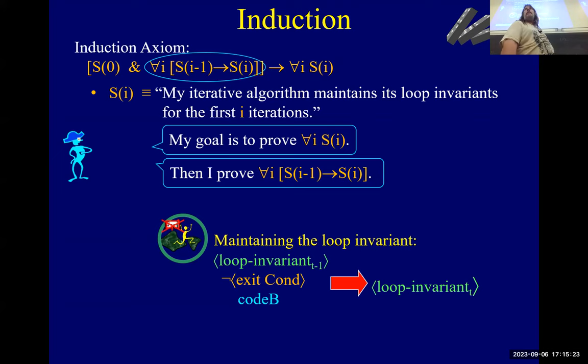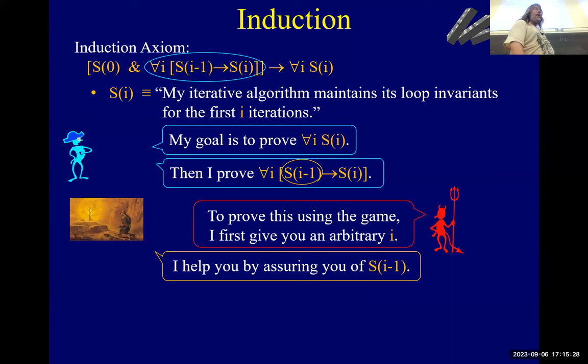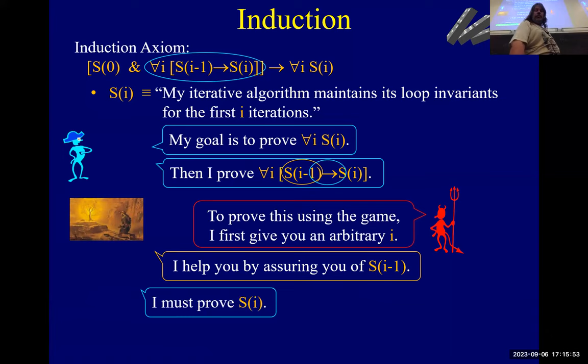All right, oh, this is my game, all right? So true logic for me, you would see for all I, so the adversary says, give me an arbitrary I, right? And then we're assuming S of I minus one. So if you assume it, I like to tell me I have an oracle that's going to help me know that that's true. And then the prover is going to have to prove S of I, right? Does that make sense?